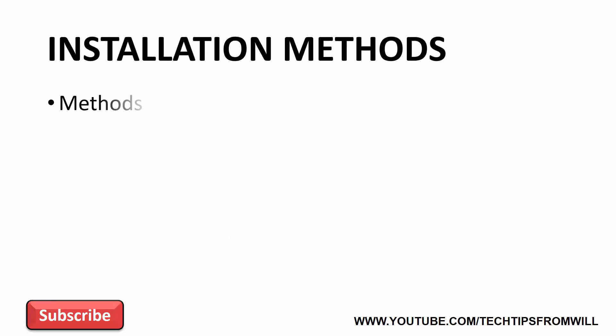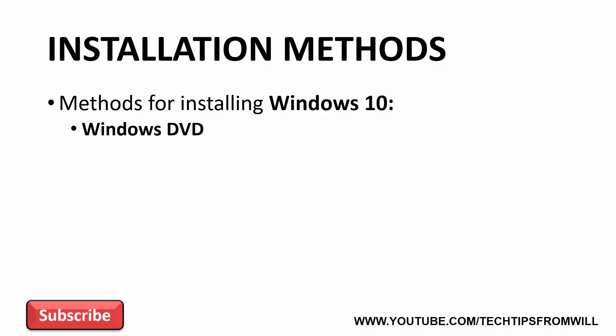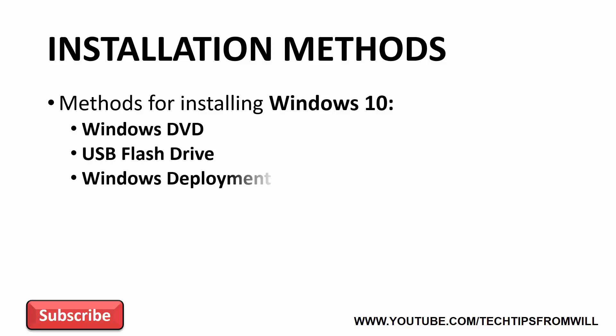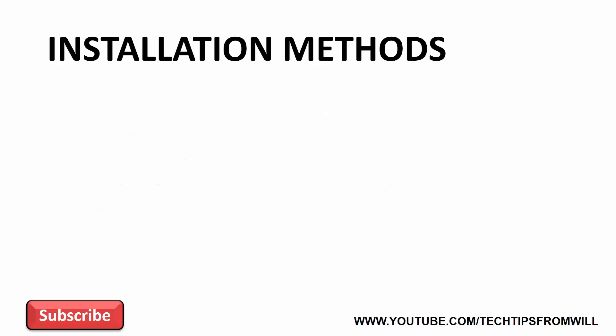In this video I will look at four methods for installing Windows 10 onto a computer. These are using the Windows DVD, using a bootable USB flash drive, deploying Windows with a Windows Deployment Services or WDS server, and using a network share to perform the install. Let's have a look at the different install methods in more detail.